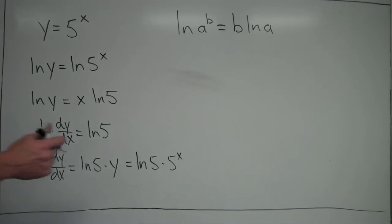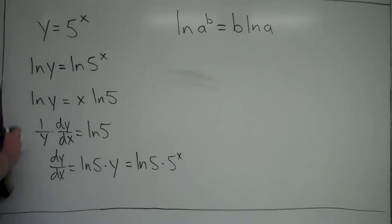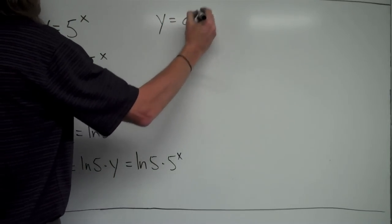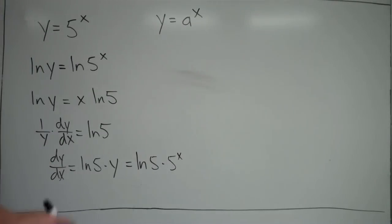Now, I'd like to generalize this. So if I just had anything like y equals, let's call it, a to the x, where a could be any number. It could be 10. It could be 100. It could be 7. Whatever. It doesn't matter. What would the general rule for the derivative be here?